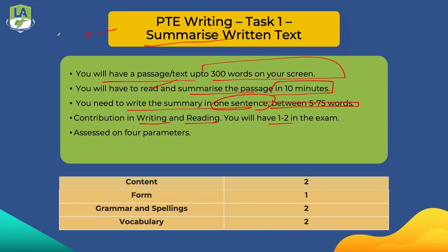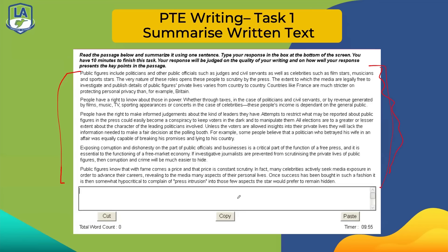This explanation is about PTE Academic, not PTE Core — for PTE Core, Summarize Written Text is different, so check the separate video for that. This task is marked on four parameters: content, form, grammar, and spellings. One sentence means there should be only one full stop — no exclamation marks, no question marks in the middle. The word limit is 5 to 75 words, and the computer checks your answer with no human involvement.